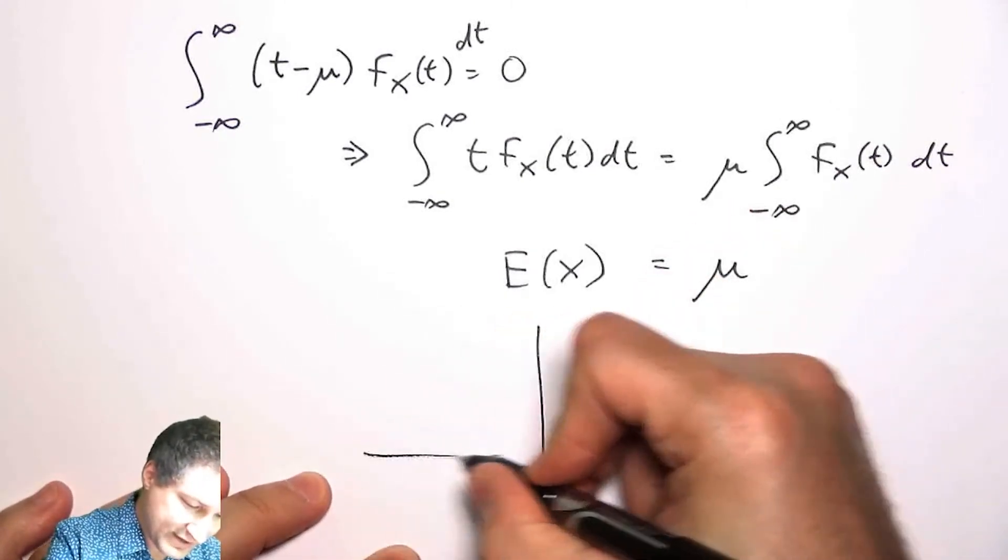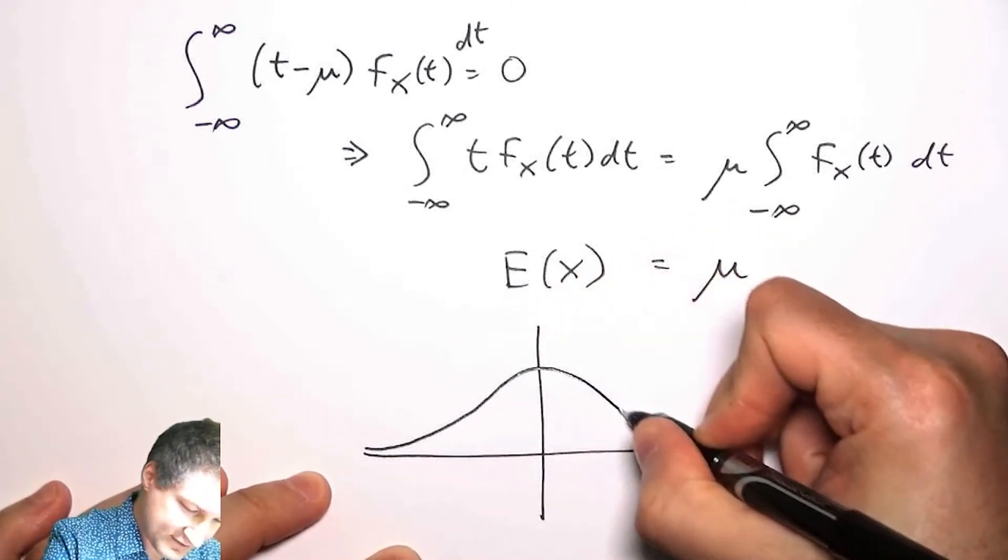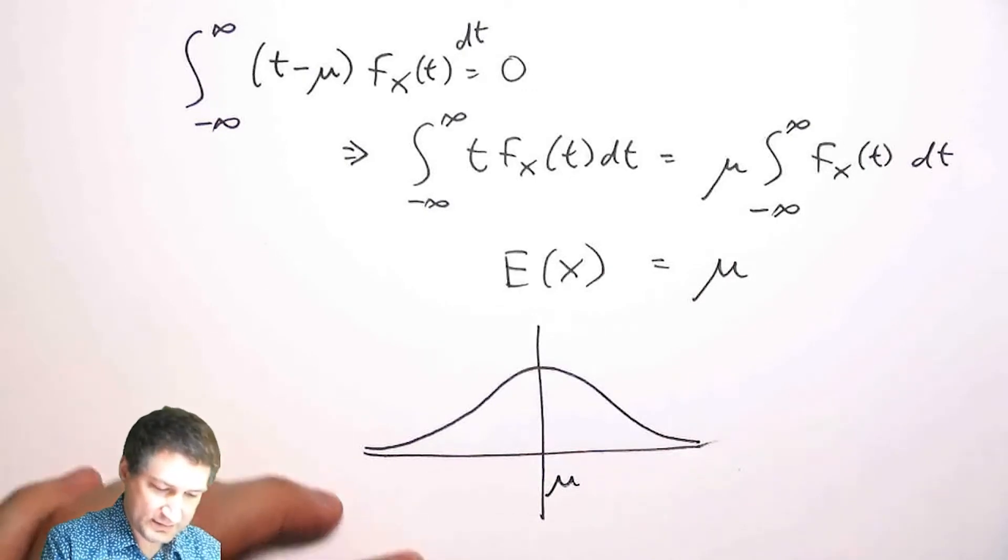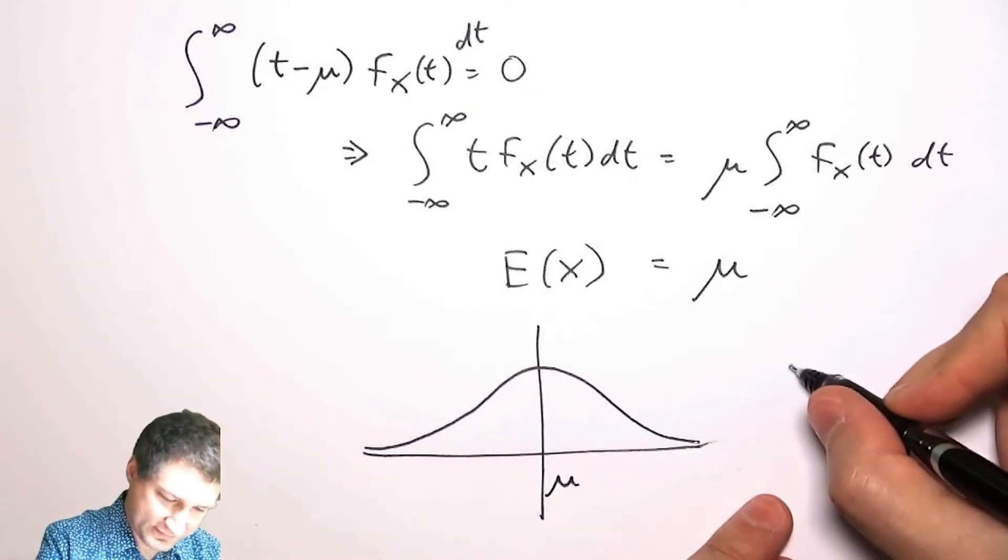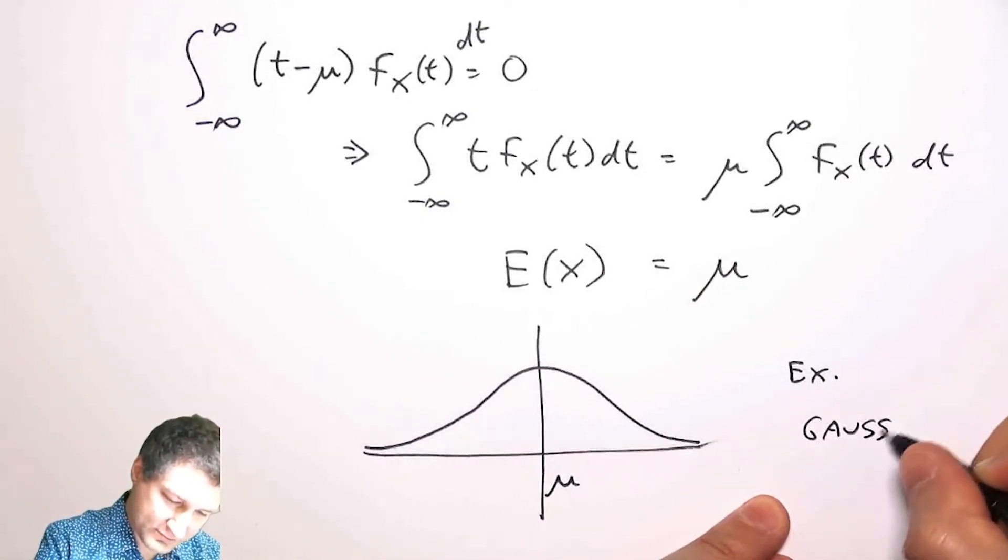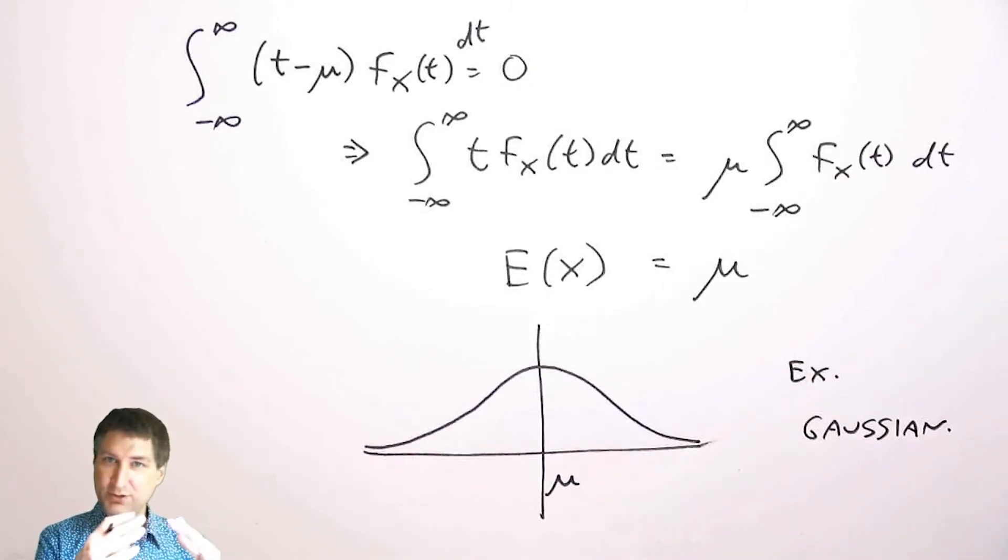And that's why the Gaussian, which has a PDF that looks like this, you know, has mean equal to mu, which is the middle point that it's symmetric around, right? So I didn't have to do any sort of fancy integral to prove why that is true.